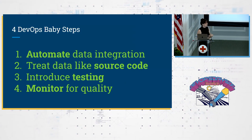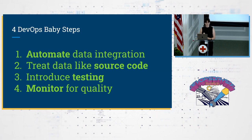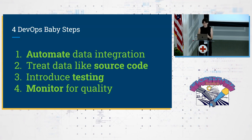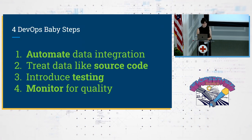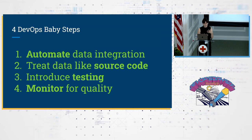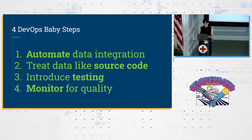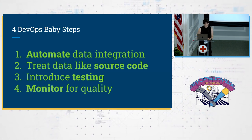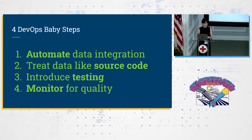In order to accomplish these things that our users need, we're going to use four DevOps baby steps. First, we're going to automate the data integration steps. Second, we're going to treat the data like source code. Third, we're going to introduce testing. And fourth, we're going to monitor for quality.